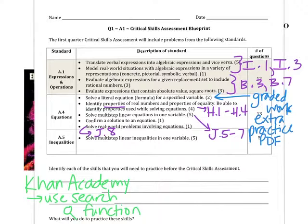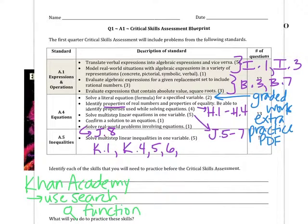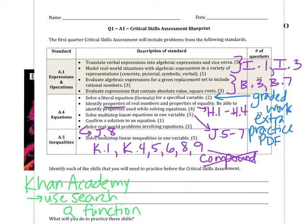And then finally, multi-step linear inequalities — inequalities in one variable, that's A.5. There are quite a few of those. Start with graphing inequalities at K.1. If you're looking for one-step inequalities, that's K.4 and K.5. If you're looking for multi-step inequalities, it's K.8 and K.9 — basically your whole K menu. Note that we do not have to learn compound inequalities; you can learn about them as extra, but you won't see them on your CSA. And that covers all of the skills listed here.